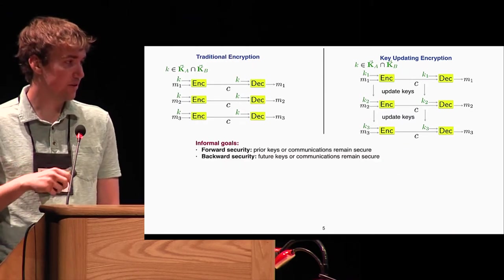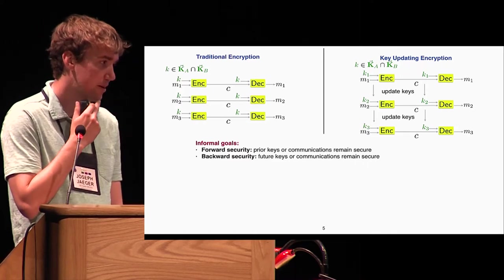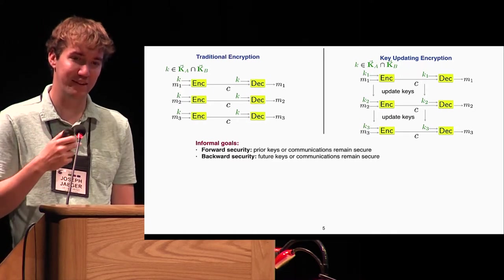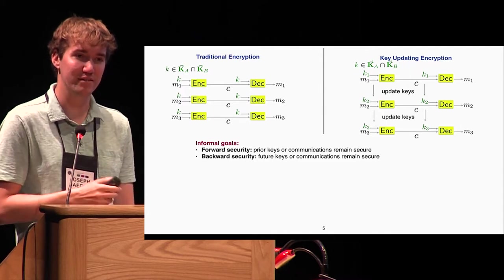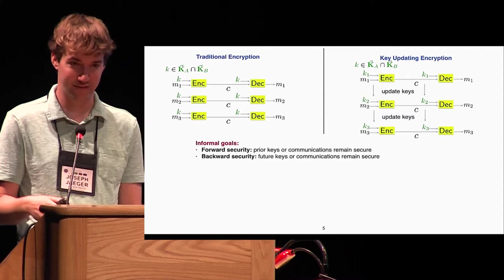In slightly more detail, the general goals we're aiming for here are often referred to as forward and backward security. Forward security asks that in the face of an exposure of prior keys in communications, security is maintained. Backward security asks for the opposite.